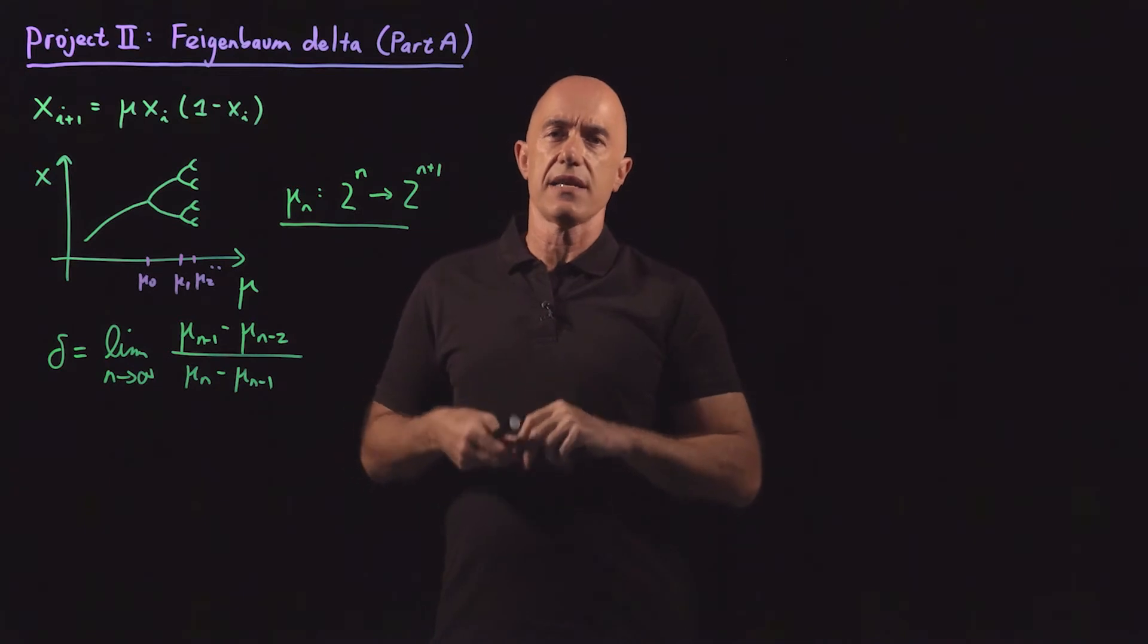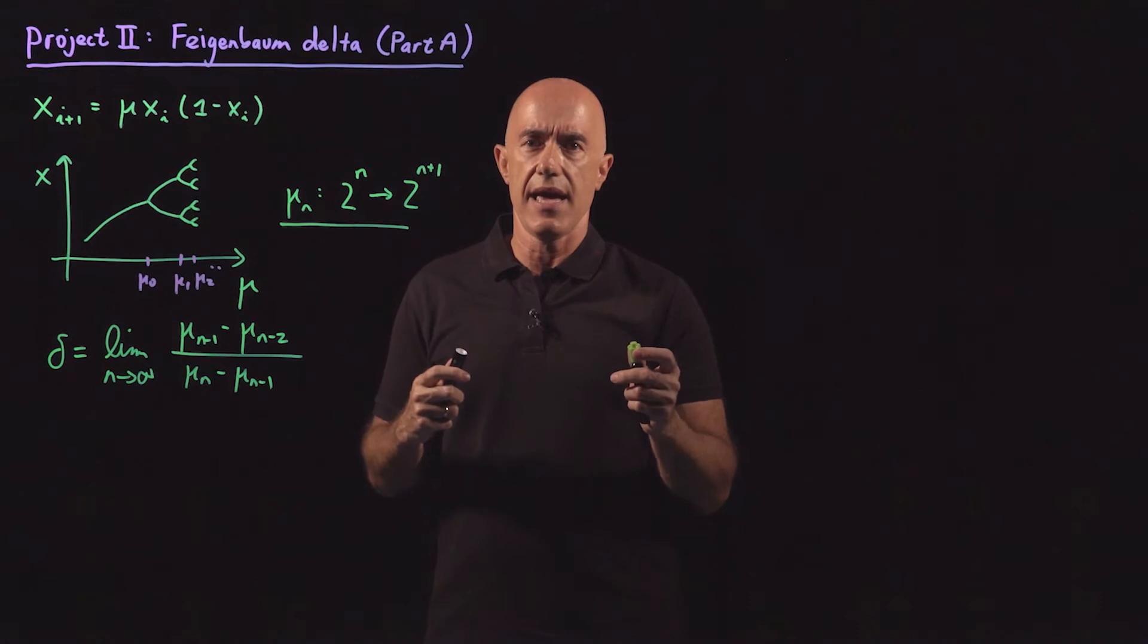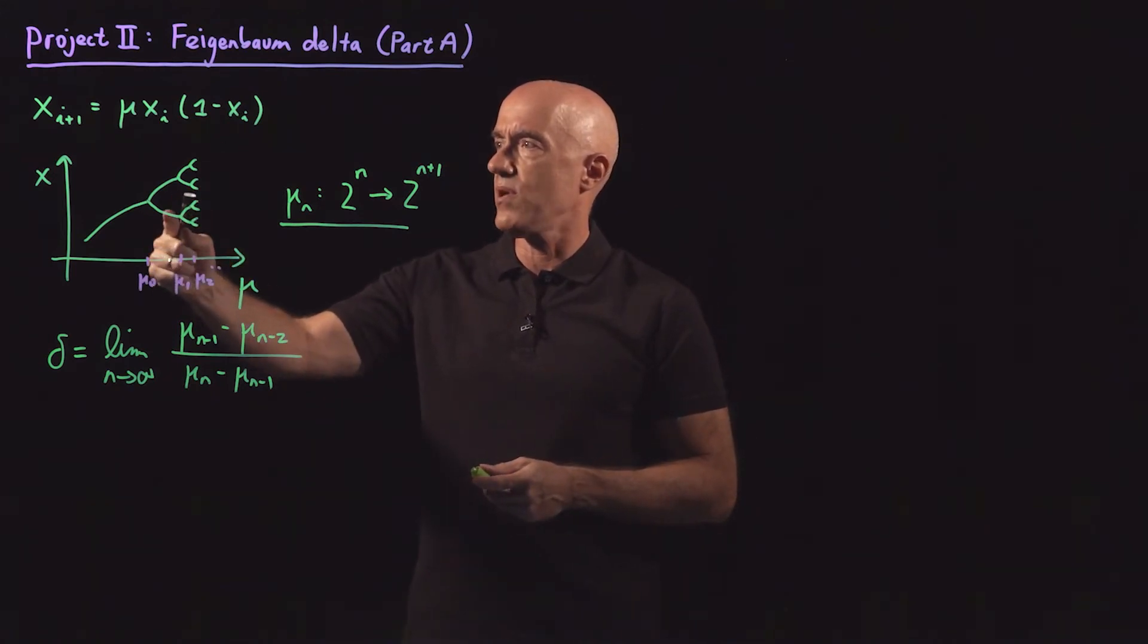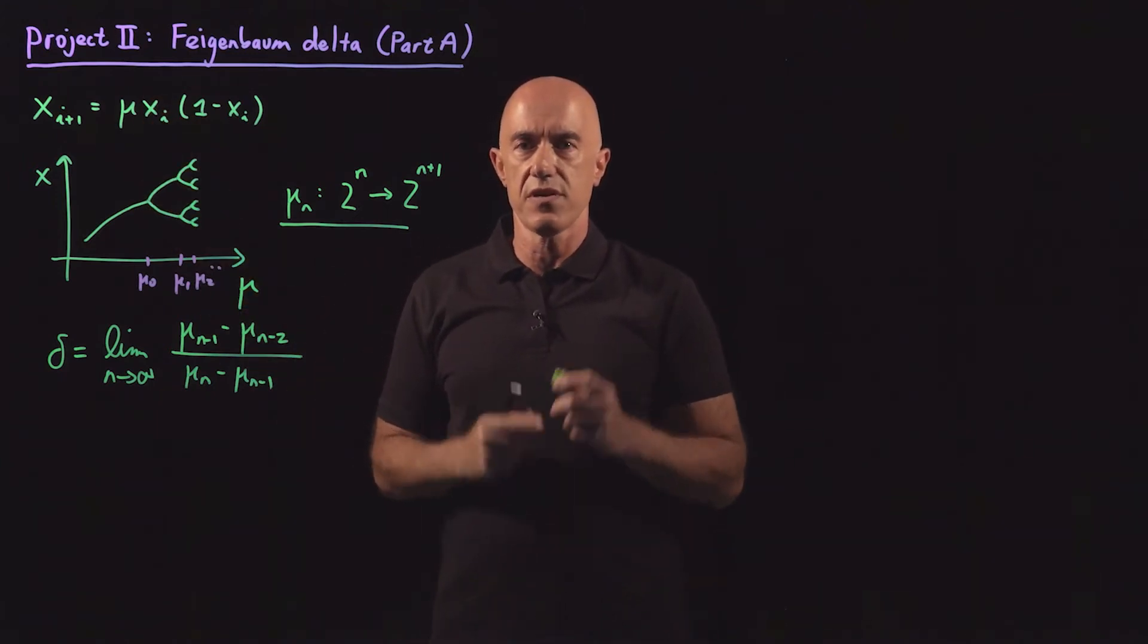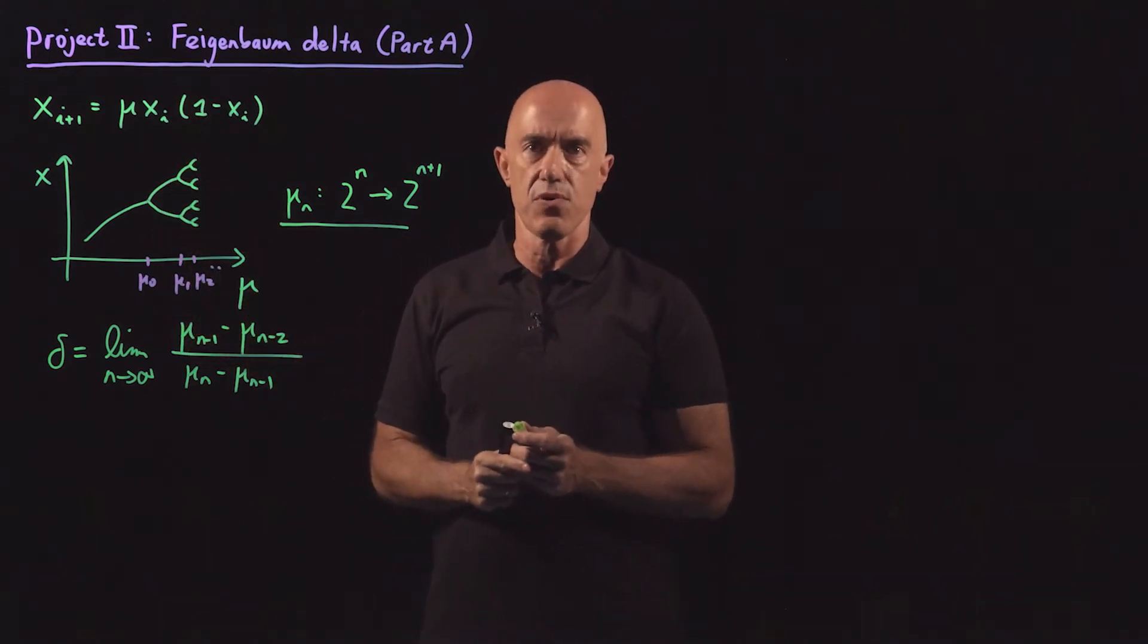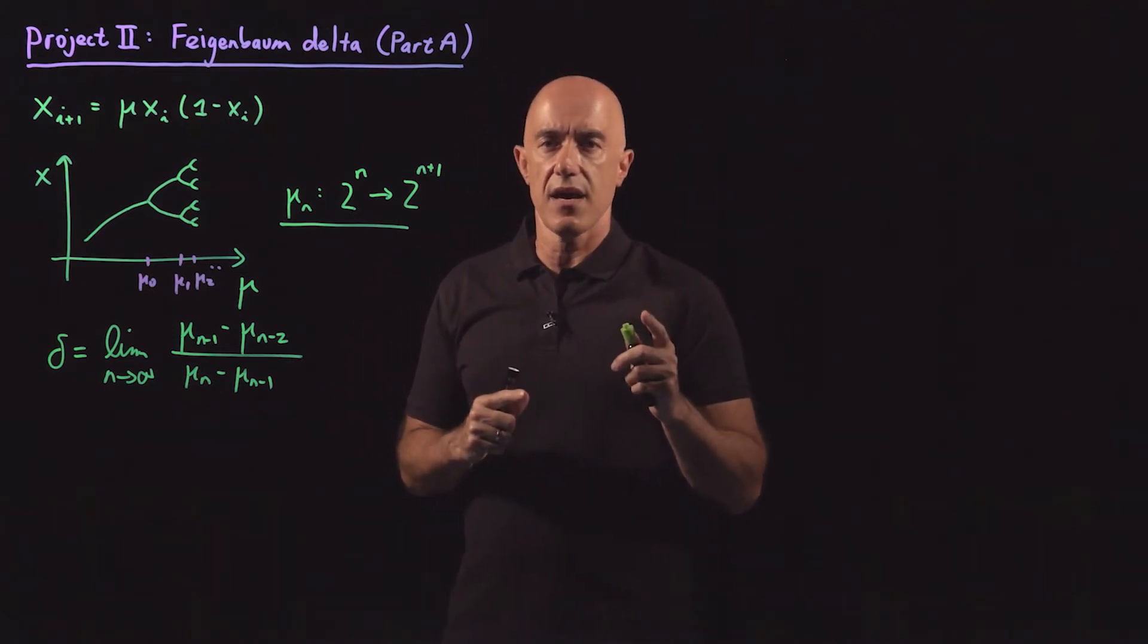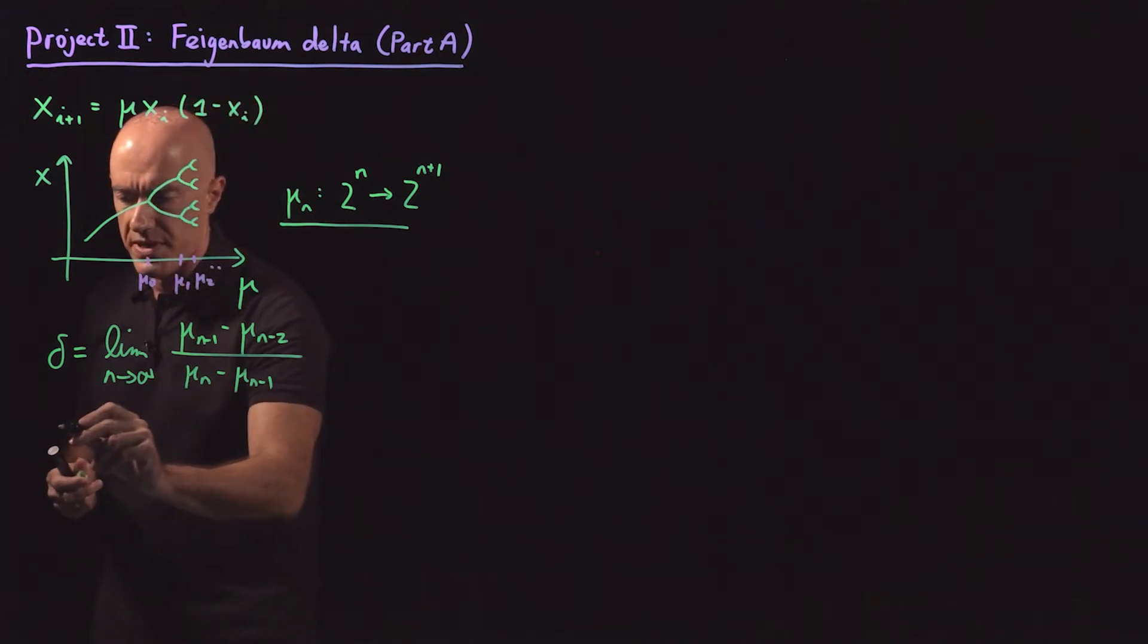So we could try an algorithm that tries to compute these mu's, but this will be a problem because the transient is extremely long. Right at the bifurcation points, it takes very many iterates of the logistic map to get rid of the transient. So instead of computing at the bifurcation points, we're going to compute at a different value where the cycle is called super stable. So let me discuss how we define that value.